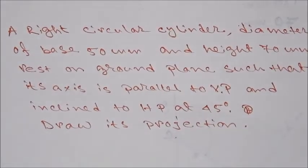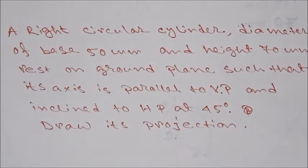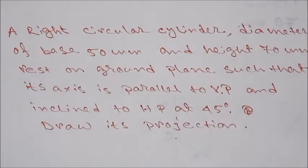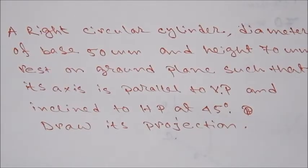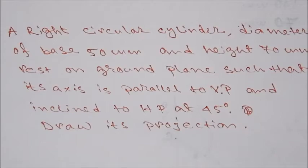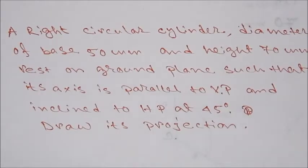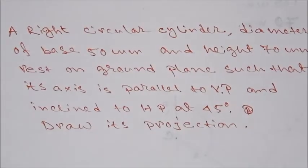In this question, it is a right circular cylinder. Right circular cylinder means a plain cylinder. Its base is 50mm diameter and height is 70mm. It rests on the ground plane so that its axis is at a 45-degree angle with the horizontal plane. For this drawing, we will first make a simple projection, and after that we will tilt its base to 45 degrees.